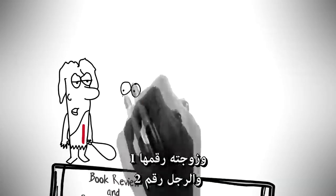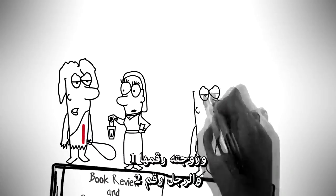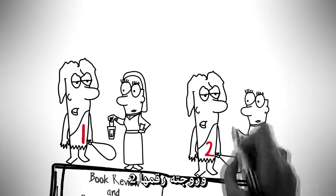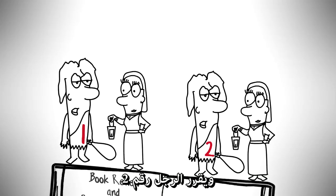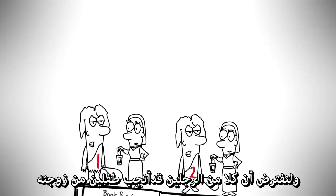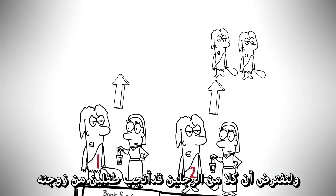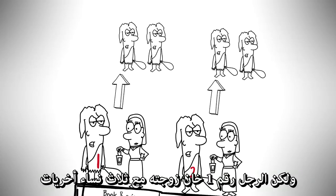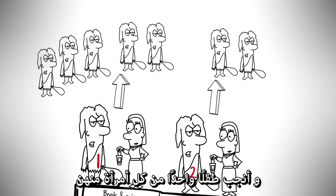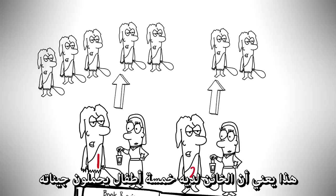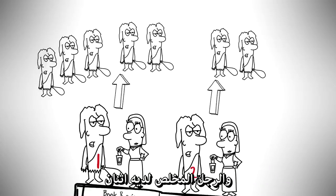Let's go back a long time ago. We have man number one with wife number one and man number two with wife number two. Man number one decides to cheat on his wife, and man number two decides not to cheat. They both have two kids each with their wives, but man number one also cheated with three other women and has a kid with each. That gives the cheater a total of five kids with his genes and the non-cheater only two.